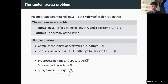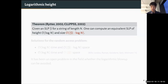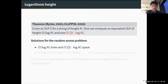Pre-processing time and space are linear — we just store the grammar and the lengths of the variables. In the worst case the height can be as large as the grammar itself. A natural question is: can we restructure the SLP so that the height is small? Results from 2002 by Rytter and by Charikar et al. showed that you can always reduce the height to O(log N), but the size grows from g to g · log N. This gives a random access solution with space g · log N and query time O(log N).